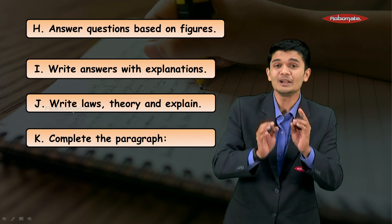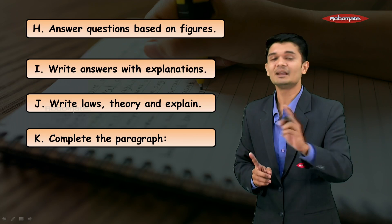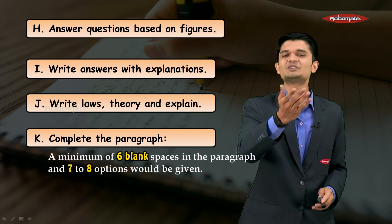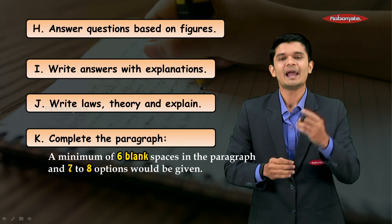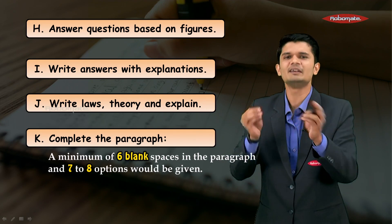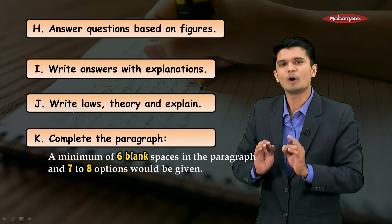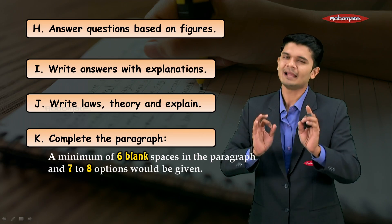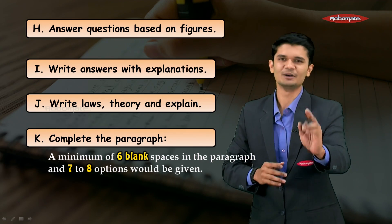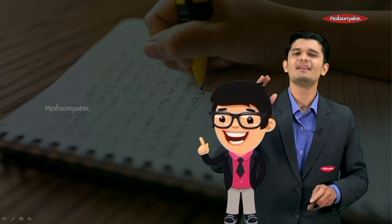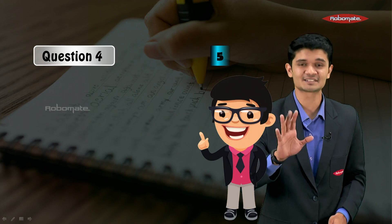The easiest and most scoring question type in this section is complete the paragraph. In these paragraph-based questions, you will have a minimum of six blank spaces in the paragraph and will be given seven to eight options to fill in. Read the paragraph carefully, find the appropriate option for each blank space, and that will ensure you get full marks in this section of Question Number 3.